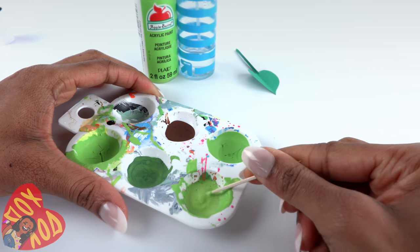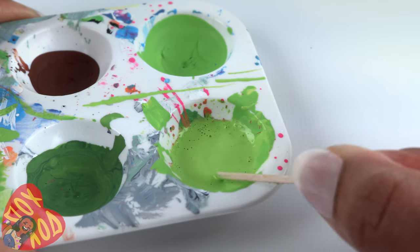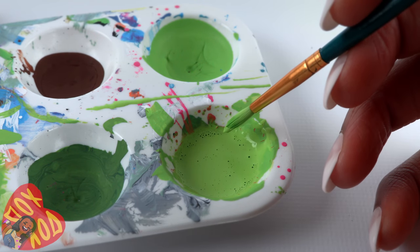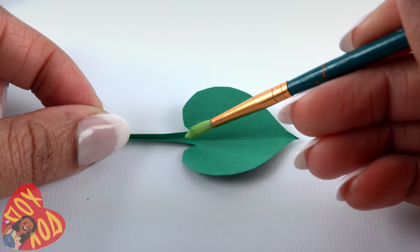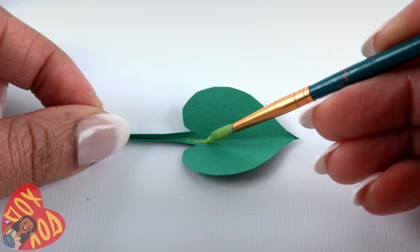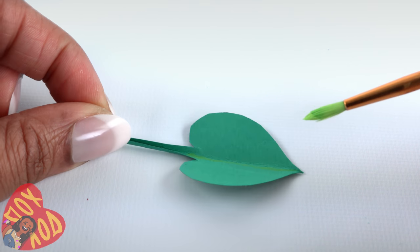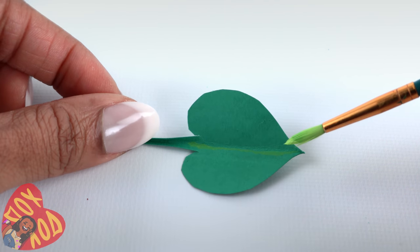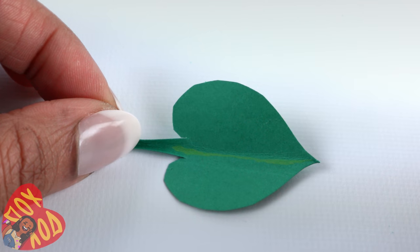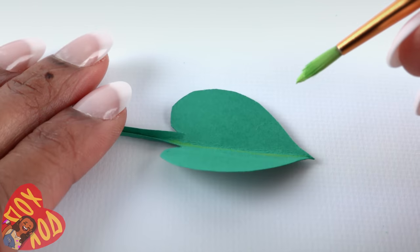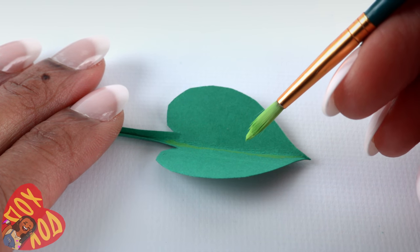Mix acrylic paint and water to thin out the paint. Get a little paint on the end of your paintbrush. Paint a straight line down the center of the leaf as thin as you can make it. Since the paint is watered down, it's very faint. You can barely see it. But that's okay because the color will pop out when we add the nail polish.